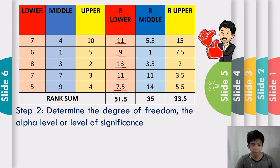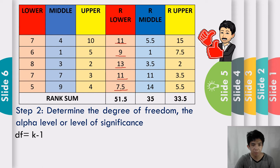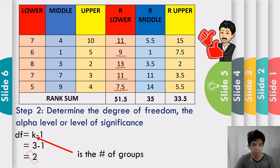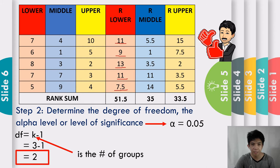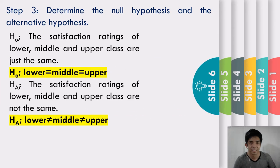Step 2: Determine the degree of freedom, the alpha level, or the level of significance. The formula for degrees of freedom is DF = k − 1, where k is the number of groups. We have 3 groups, so 3 − 1 = 2. Our degrees of freedom is 2. And we assume that our alpha level, or level of significance, is 0.05 or 5%.